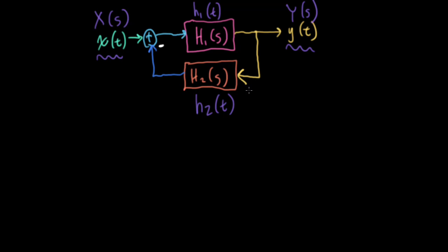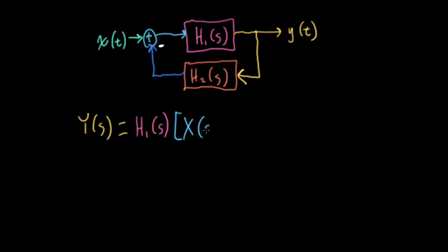So let's look at the output in the Laplace domain. We would have the system function of our feedforward system, this H1S, times the input to the system, which will consist of big X of S minus the output of H2. And what's the output of H2? Well, that's going to be the input to the feedback system, which is Y of S times the transfer function of the feedback system.